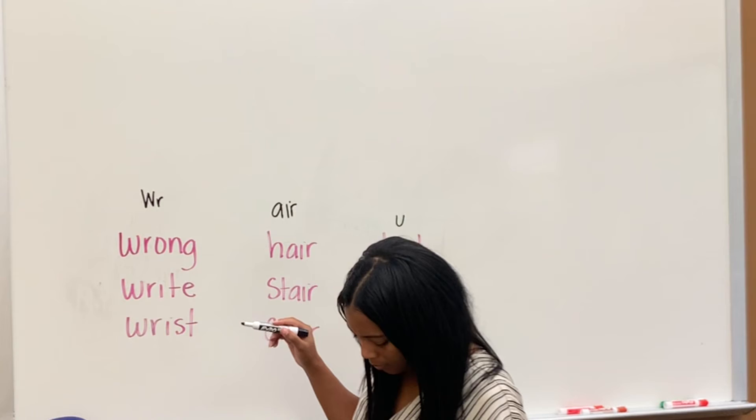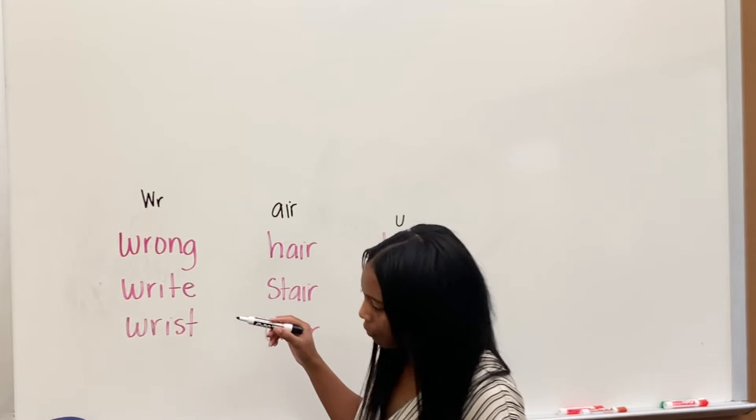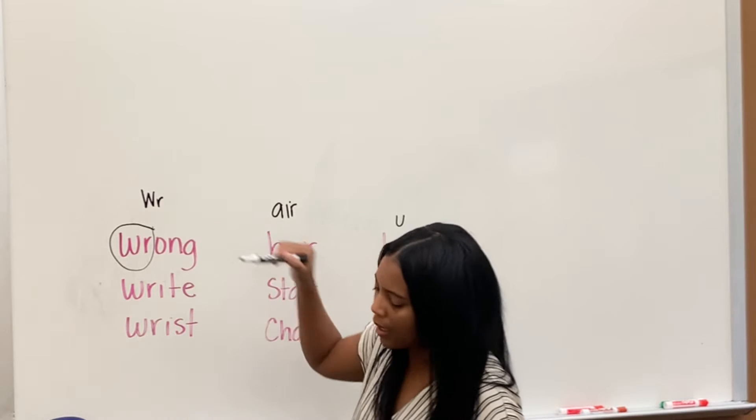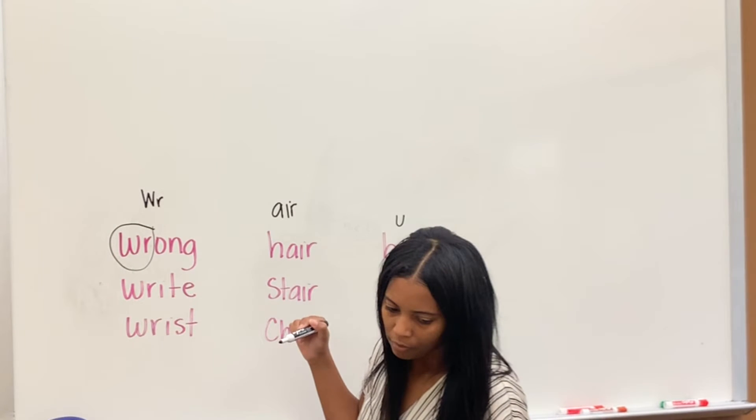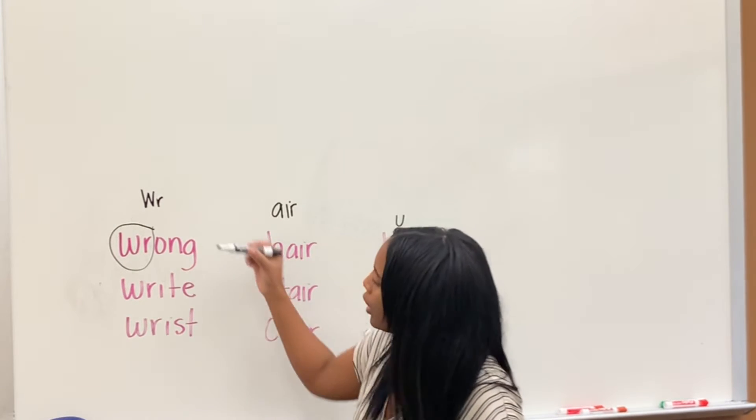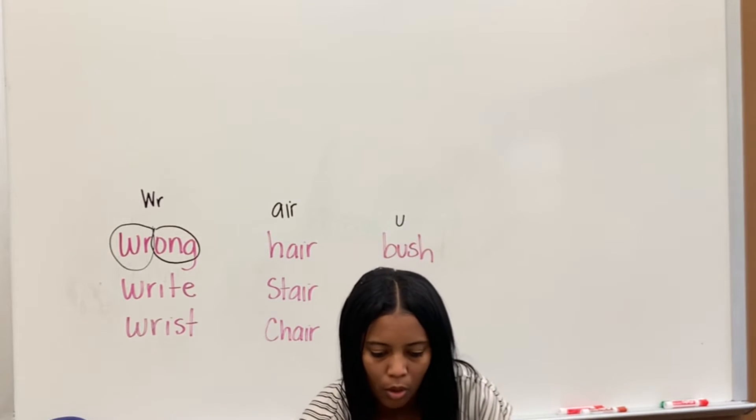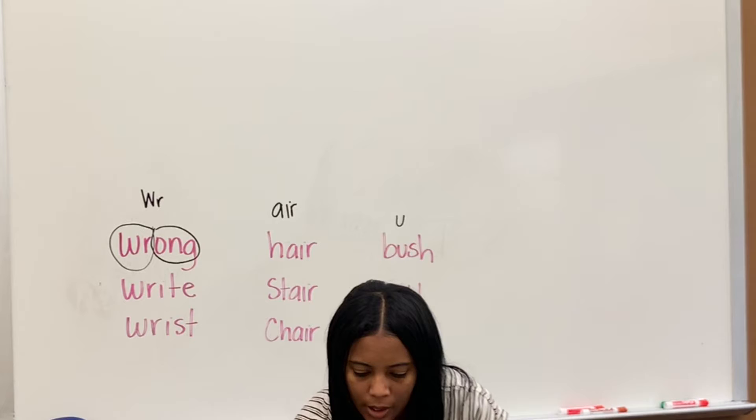Okay, go ahead, Harlem. Good, WR, and what's the other sound? Good, ONG, what's the word? Wrong. Wrong, correct, very good.